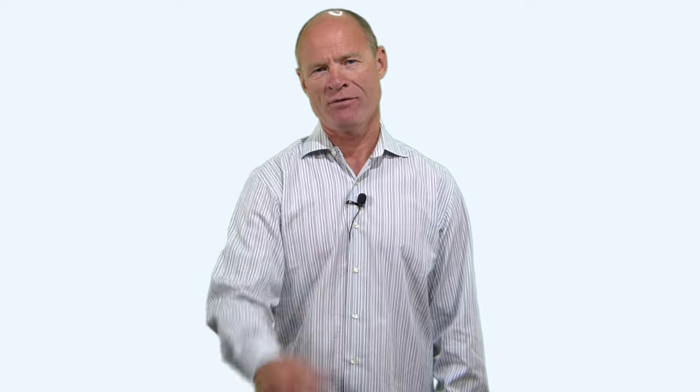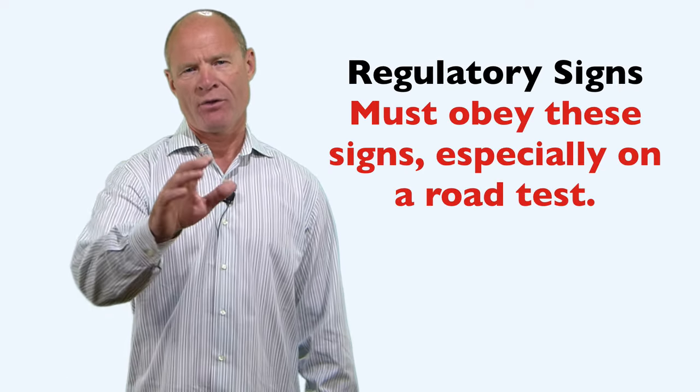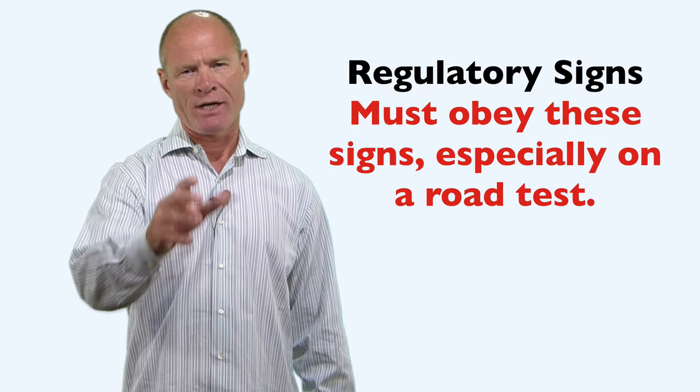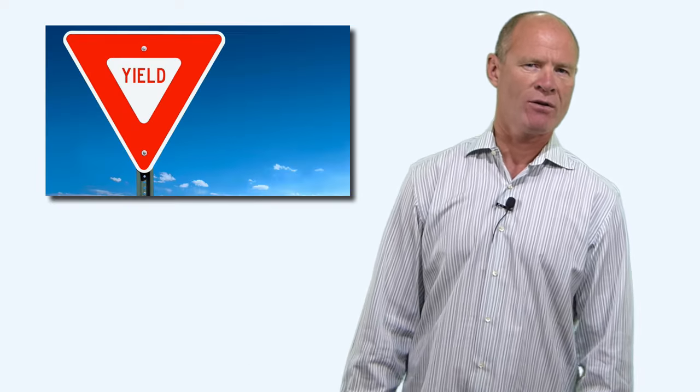Hi there smart drivers, Rick with Smart Drive Test. Welcome back, talking to you today about the major classifications of road signs. First and foremost and the most prominent are regulatory signs. The root word of regulatory is regulation. Regulation means law, and if it is the law you must obey that sign. The major regulatory signs are stop signs, yield signs, railway crossing signs, and speed signs — rectangular signs with a black border, white background, and black text or symbols. These must be obeyed, and drivers must have knowledge of these for a learner's or on-road road test.